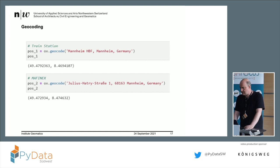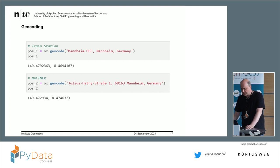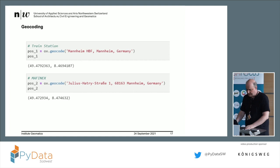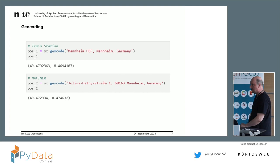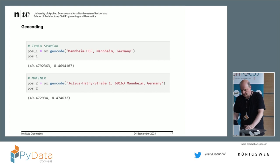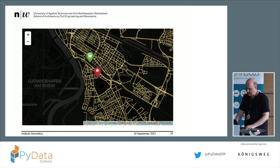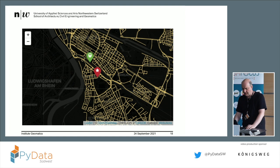I can convert the street network to a JSON file and display it — that's the yellow street network we saw before. So let's geocode two positions. There is an OX geocode function which returns the exact position in GPS coordinates, or WGS84 coordinates. For example, I take the Mannheim Hauptbahnhof, geocode it, and get the position back — I checked it and it's correct. Then for this building, I enter Julius-Hattrichstraße 1 with the postcode in Mannheim, Germany, and I get the position of this building — and that worked.